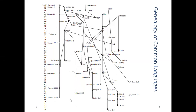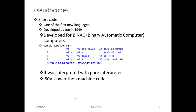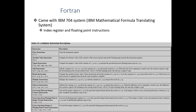The first question is: what makes FORTRAN actually popular? Because in 1958 there were other programming languages as well. FORTRAN first came with the IBM 704 system, which depended heavily on arithmetic operations — mathematical operations — and had different instruction sets so we could compute different mathematical operations easily.